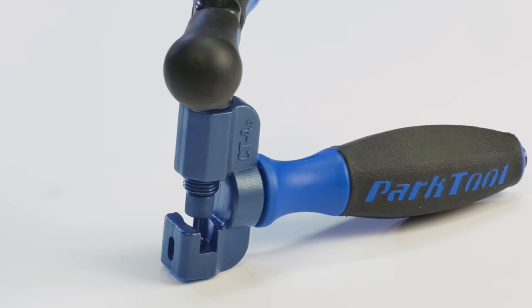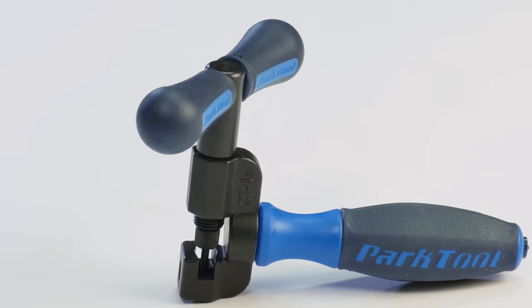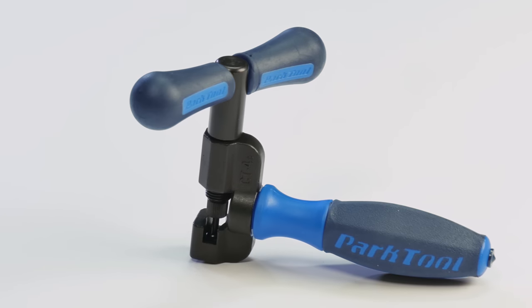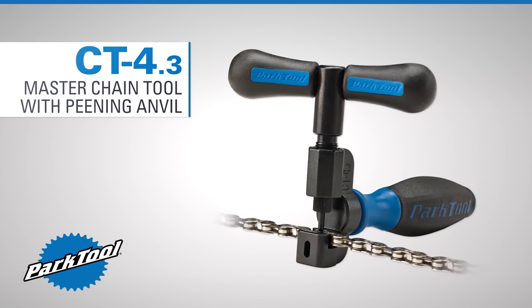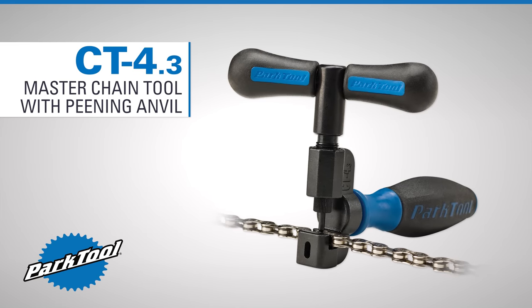Machined investment cast body and components, perfectly contoured and cushioned handles, designed for speed and accuracy. The Park Tool CT 4.3 Master Chain Tool with Peening Anvil.